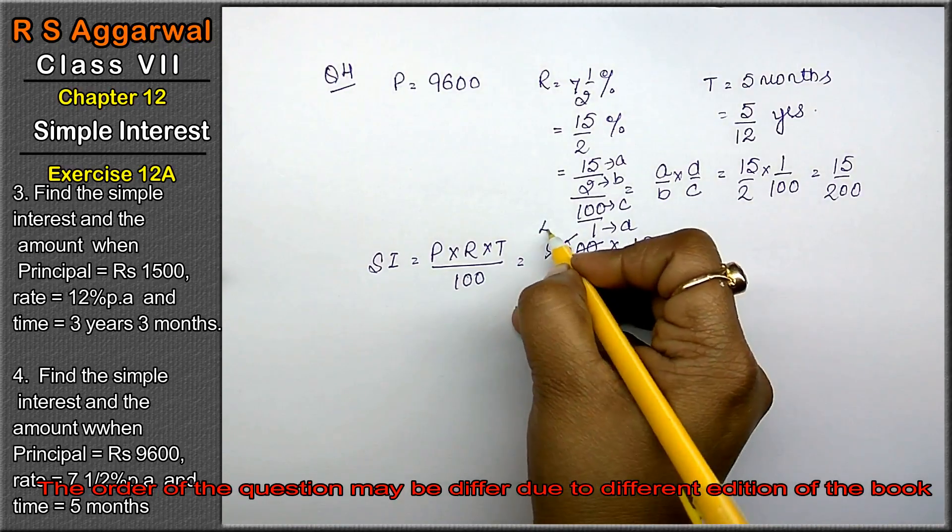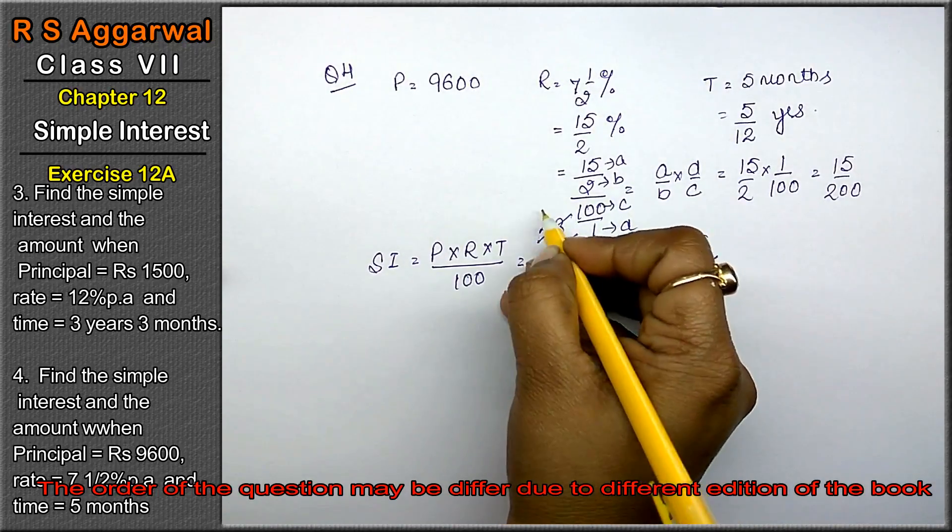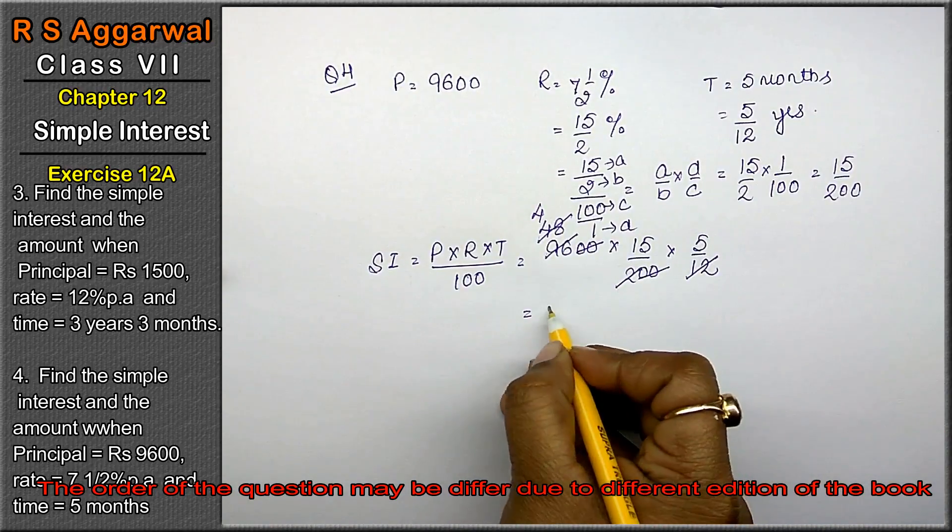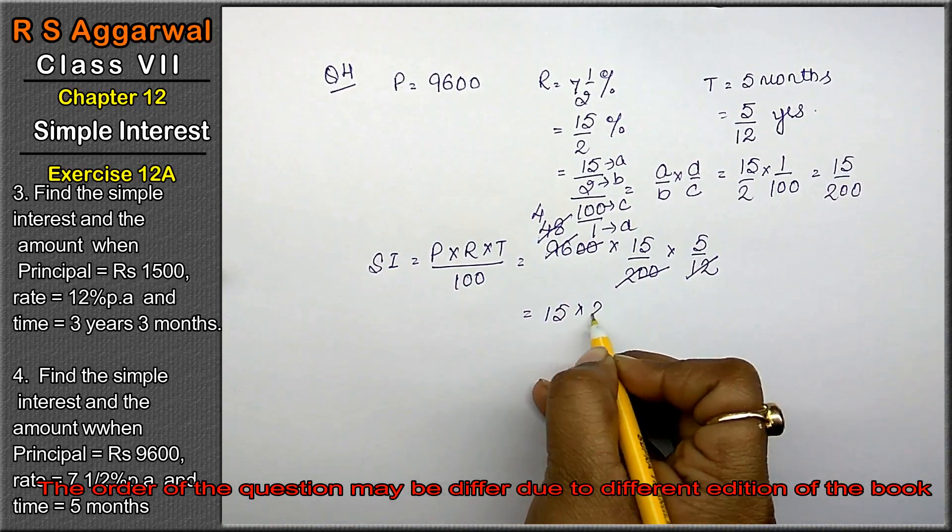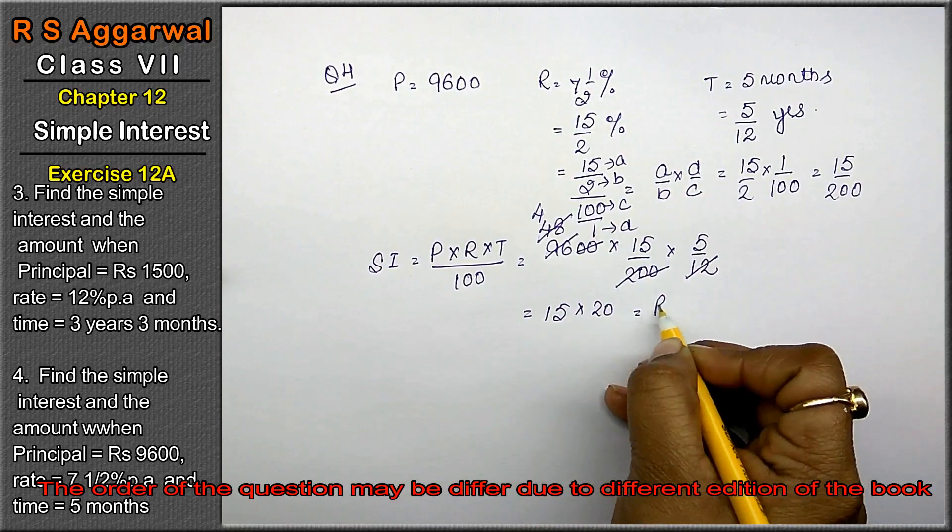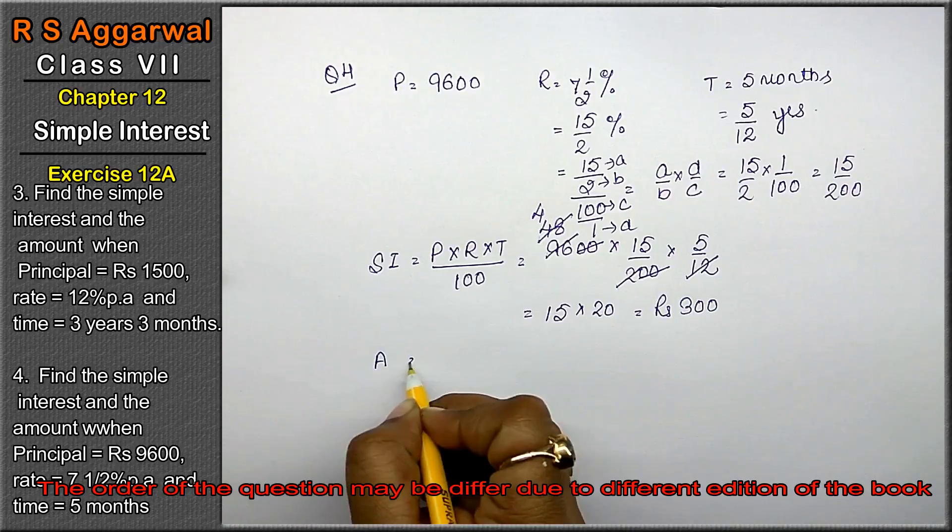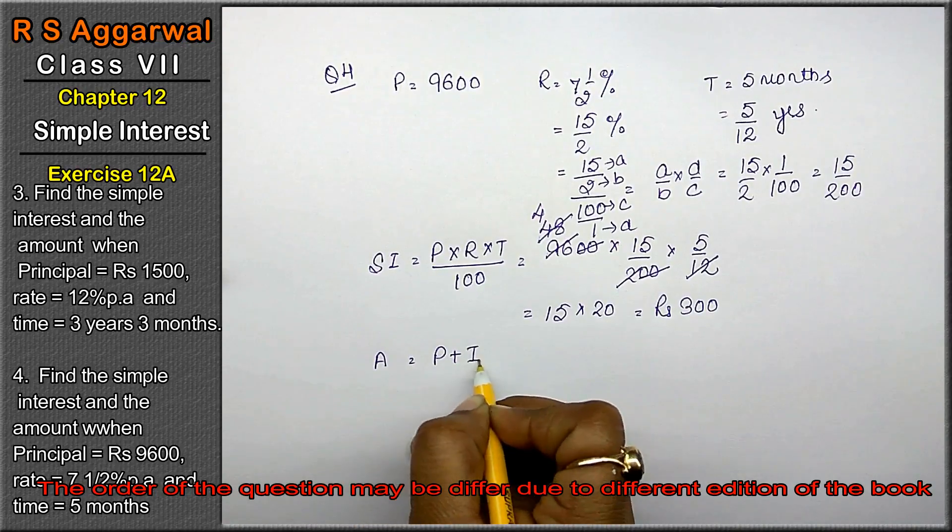Canceling and calculating: 2 zeros cancel, giving 96. Then calculating step by step: 20 into 15 equals 300.